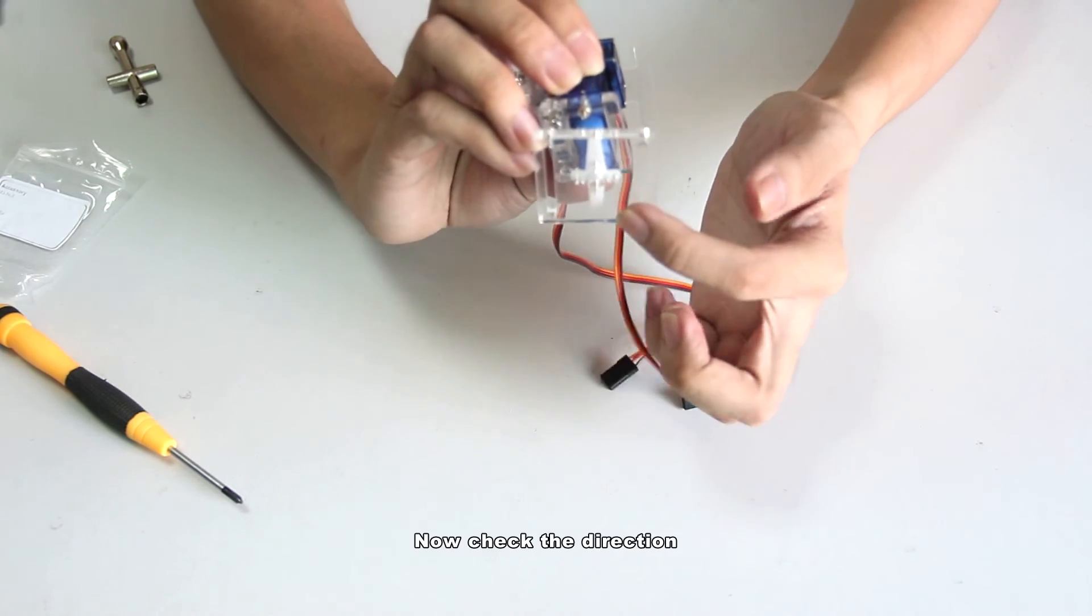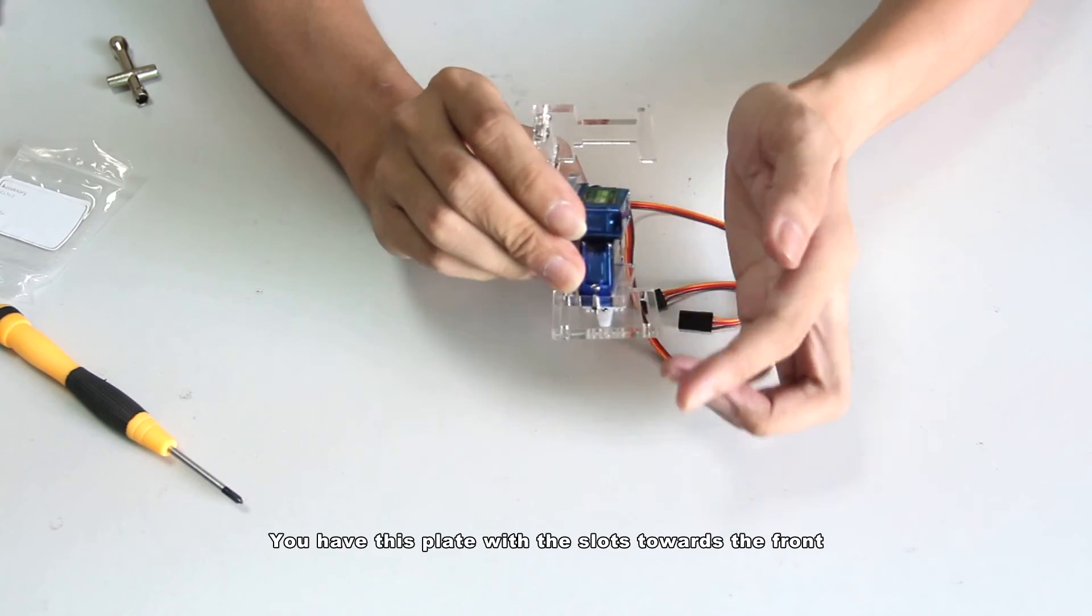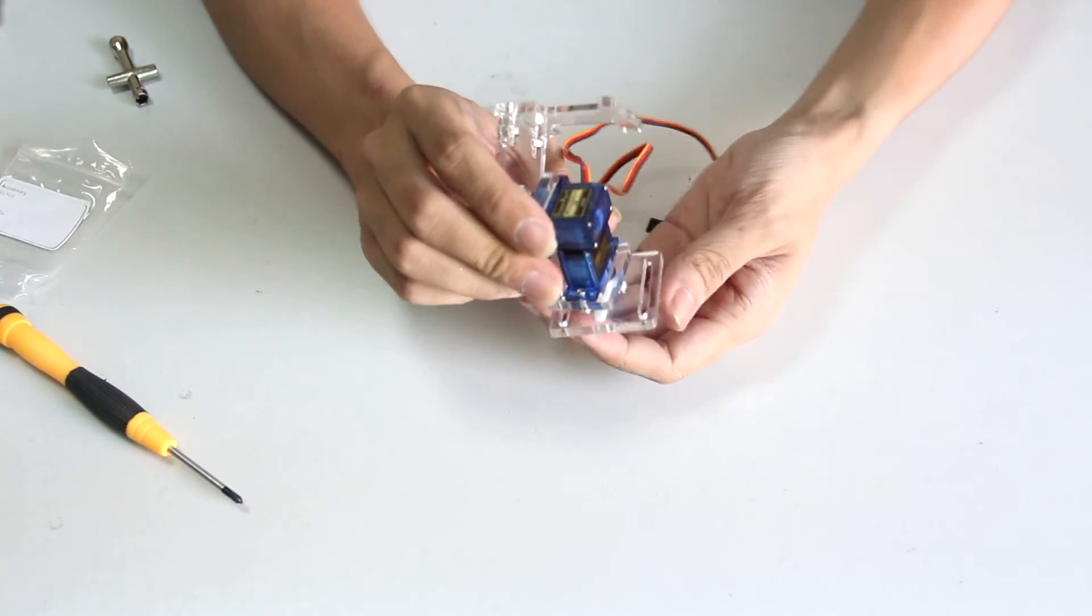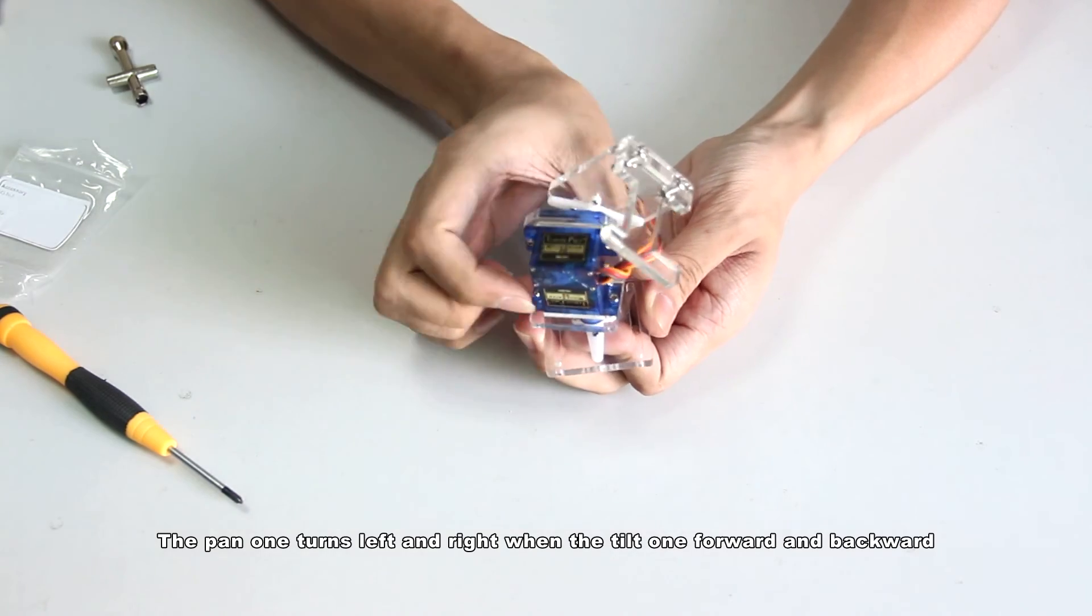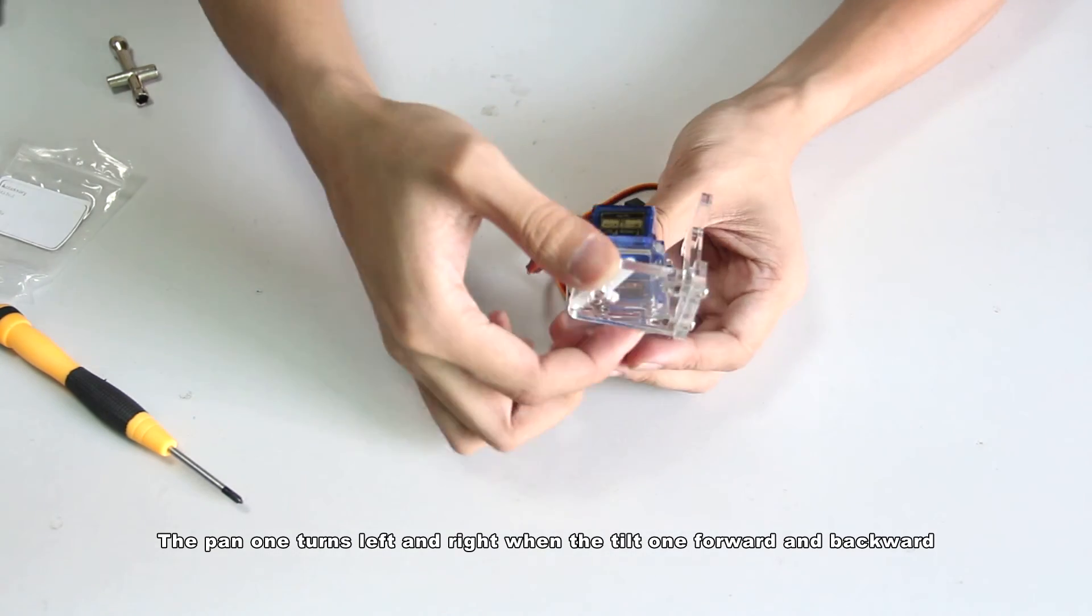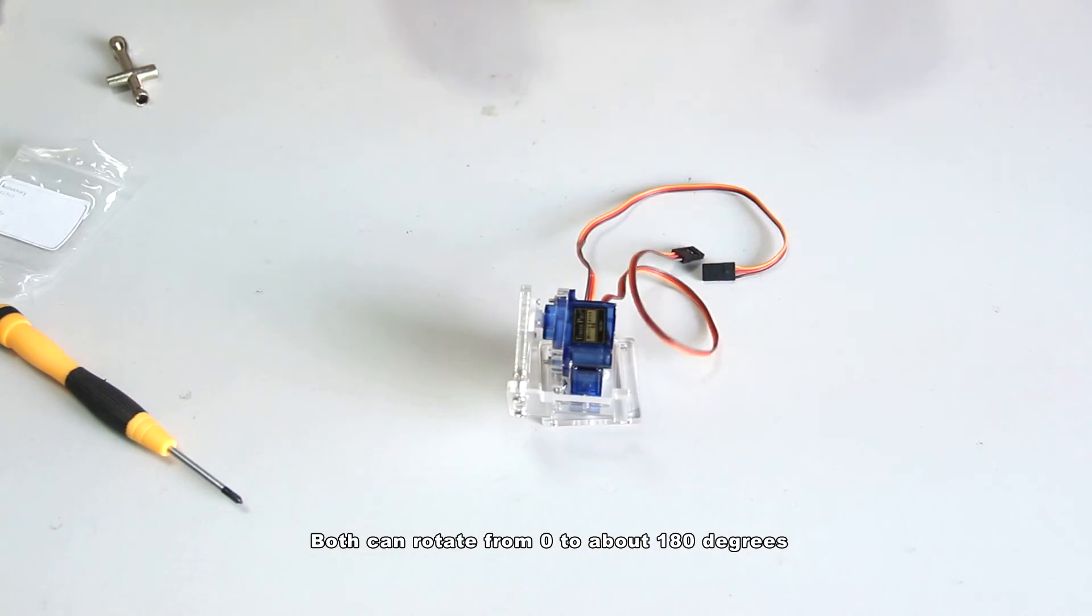Now check the direction. You have this plate with the slots towards the front. Turn the servos. The pan one tilts left and right when the tilt one forward and backward. Both can rotate from 0 to about 180 degrees.